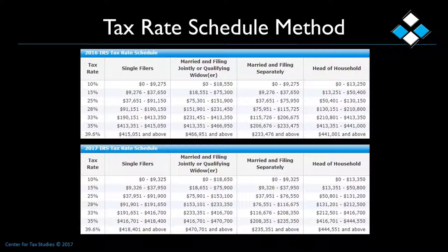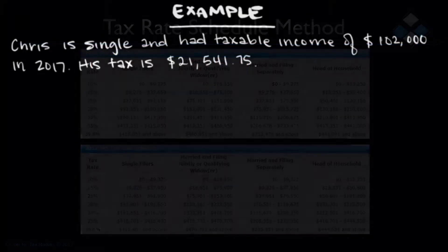To start off with, let's assume your client Chris is single and had taxable income of $102,000 in 2017. His tax is going to be $21,541.75.